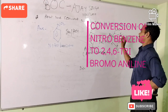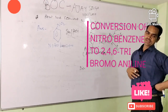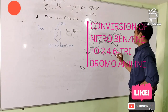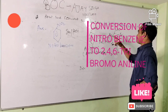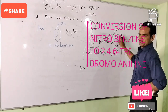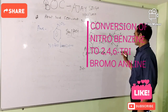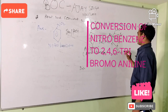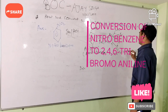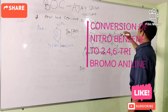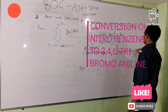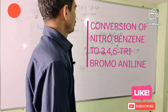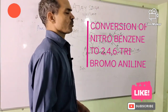You can see the bromine atoms in this benzene ring. Bromine is at carbon number 2, carbon number 4, and carbon number 6. So we write 2,4,6 — tri (for three bromines) — bromo — and this group is called aniline. This is the conversion of nitrobenzene into 2,4,6-tribromoaniline.